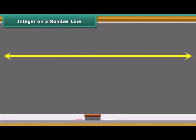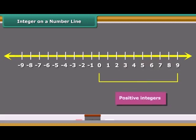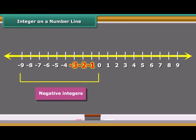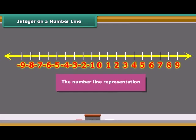This figure represents a line marked with some points at equal distance. A point on it is marked as zero. Points to the right of zero are positive integers. Points to the left of zero are negative integers and are marked minus 1, minus 2, minus 3, and so on. This type of representation of integers is called the number line representation.